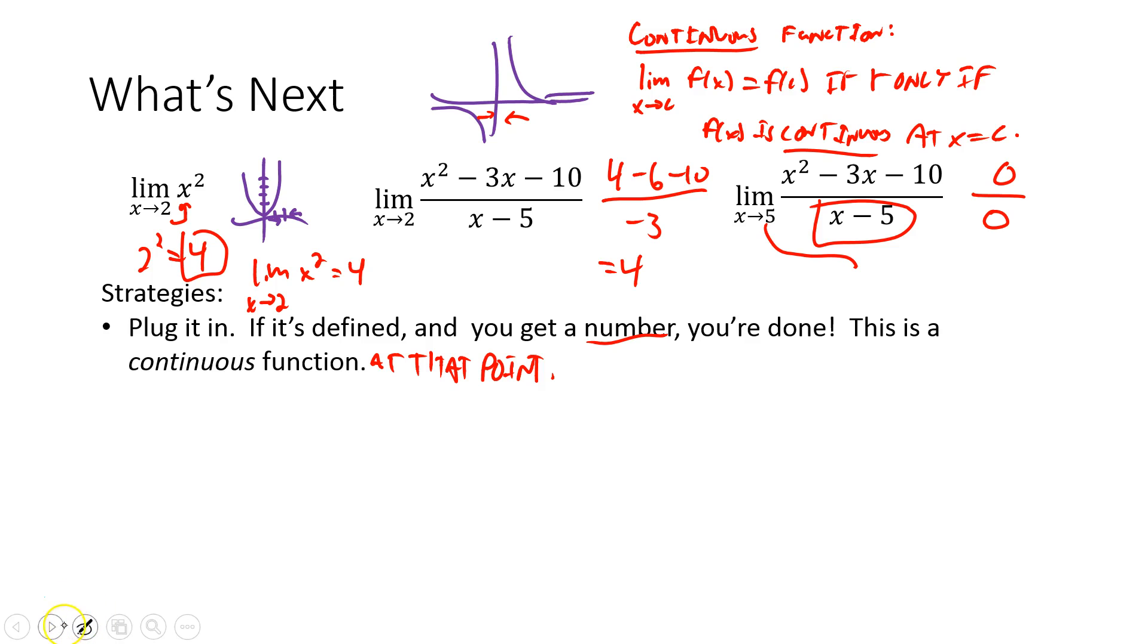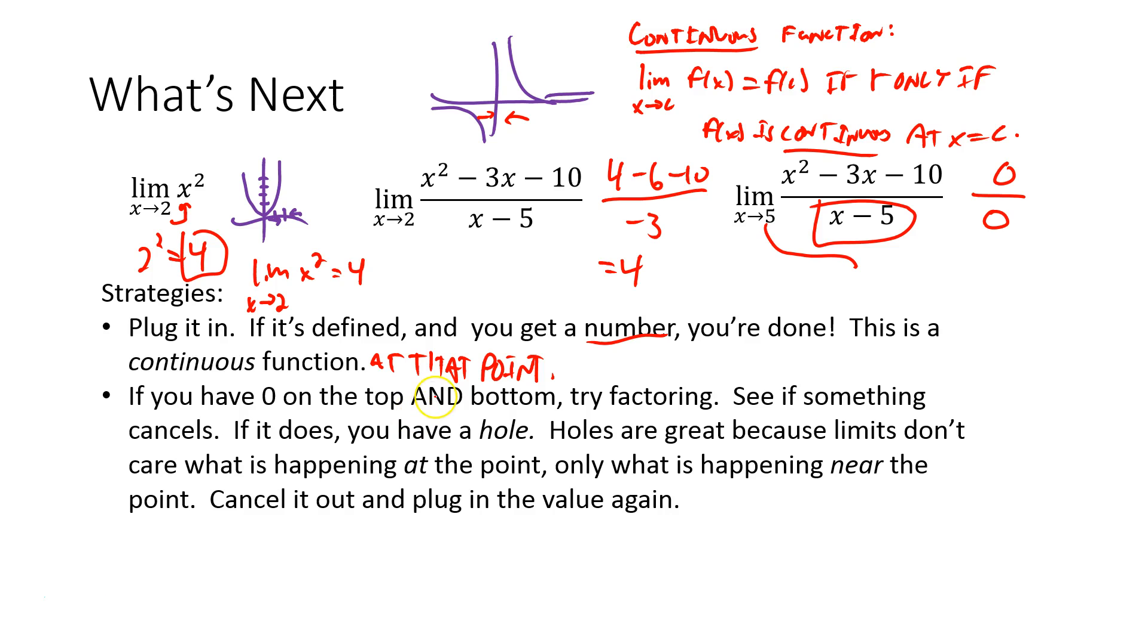It doesn't always work out that nicely. If you have zero on the top and bottom, which is what happened over here, then you might have to try factoring. See if something cancels out. That's exactly what happened with this problem. If it does, it's a hole. Holes are great because limits don't care what's happening at the point, only what's happening near the point.